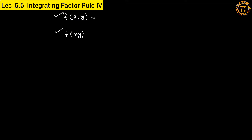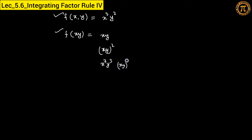For example, suppose f(x, y) = x³y². Here the degree of x is 3 and degree of y is 2 — they are different. But f(xy) means something like xy, (xy)², or x³y³, which equals (xy)³. In this type of function, variables appear in product form and the degree of x and degree of y are always the same. This is the concept we use in rule number 4.